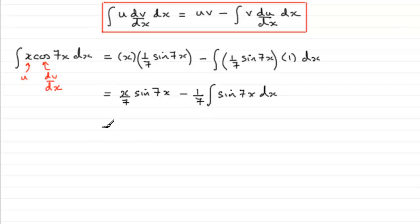Now, first term we just write down again x over 7 sine 7x, and for this part we've got minus 1/7 multiplied by the integral of sine 7x. And if you integrate sine 7x, it's minus 1/7 cos of 7x. And then we've got the constant of integration plus c.